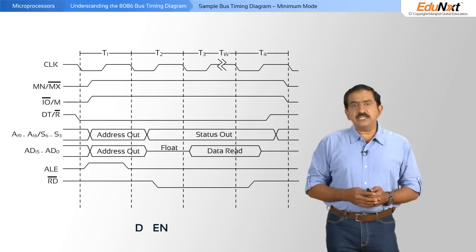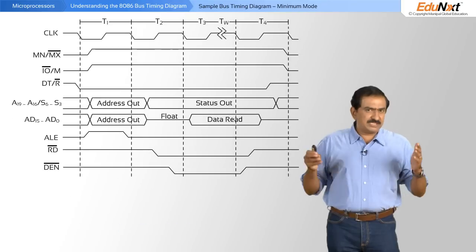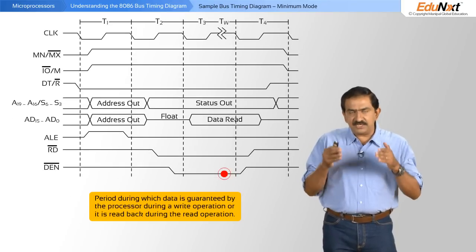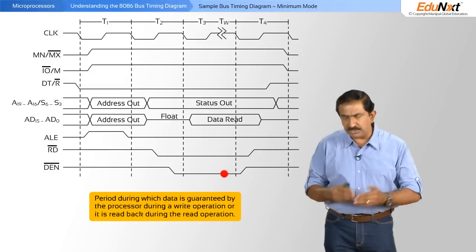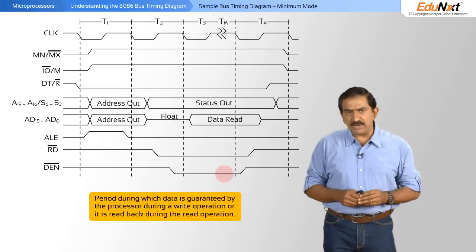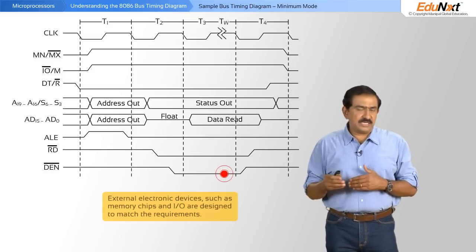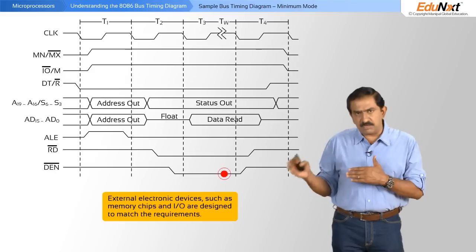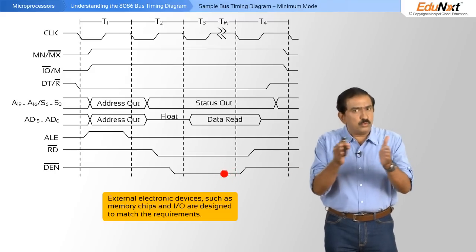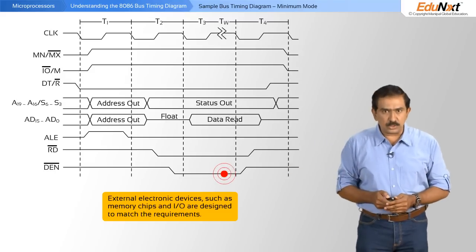Then there is something called data enable. The data enable is the period in which data is guaranteed by the processor during a write operation, or it is read back during the read operation. External electronic devices like memories and IOs will have to be designed such that they match these requirements.